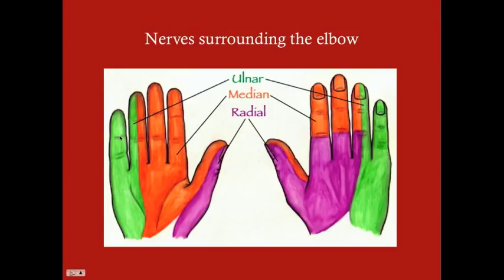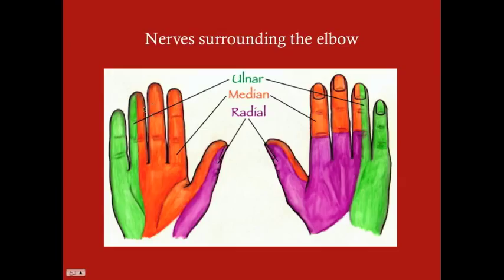On physical exam, to check for nerve damage, assess for numbness of the hand. The ulnar nerve supplies sensation to the medial hand — the pinky and fourth digit. The median nerve supplies the middle part of the hand through the thumb. The radial nerve covers mostly the posterior aspect of the hand and thumb, and is less of a concern here. Checking sensation at the pinky and the index finger covers the ulnar and median nerves respectively.